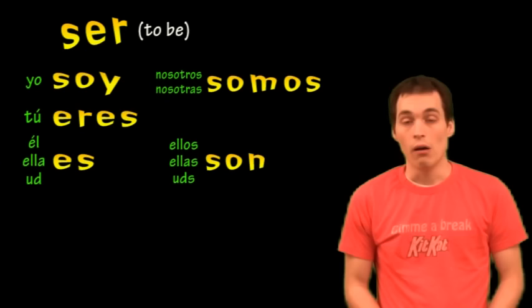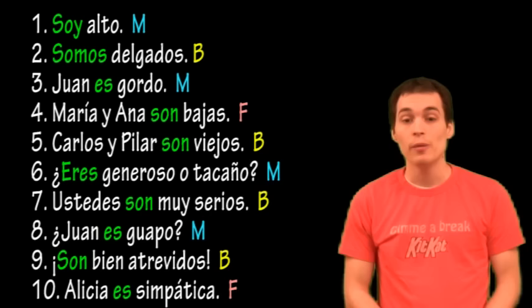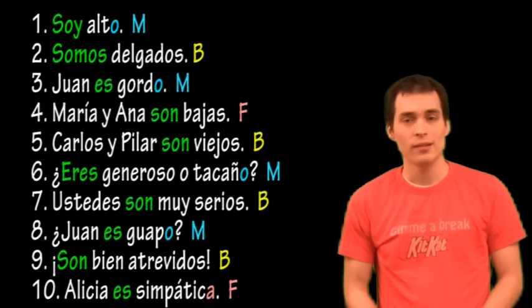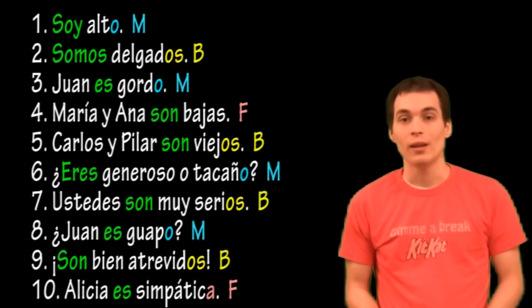Now, also notice in those sentences that when we talk about a male, the adjective usually ended in O, while it would end in A for a female. Then, when we talked about multiple males and females, we would use OS, and with multiple females we would use AS.